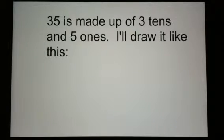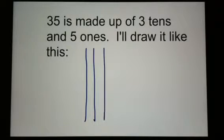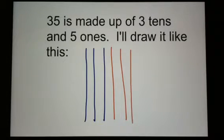35 is made up of three tens and five ones. I'll draw it like this. Here are my three tens in blue: 10, 20, 30. Now I'm going to draw my five ones in orange: 31, 32, 33, 34, 35.